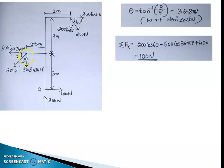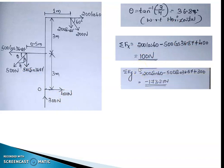Fx equals 200 cos 60 minus 500 cos 36.87 plus 400 newton, which works out to be 100 newton. For Fy: it will be minus 200 sin 60 — acting downward — minus 500 sin 36.87, plus the upward force of 300 newton, which works out to be minus 173.1 newton.